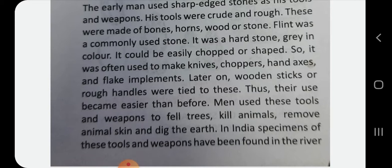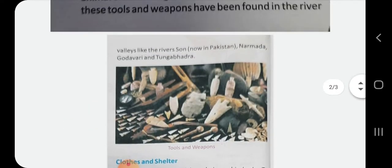Animals were killed for their skin, which early man used as clothing. They also used tools to dig the earth. In India, specimens of these tools and weapons have been found along rivers such as the Soan — now in Pakistan — the Narmada, Godavari, and Tungabhadra.